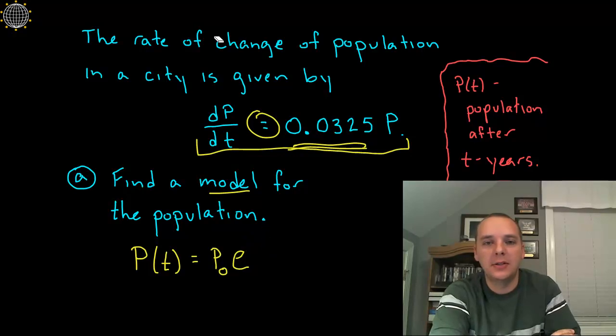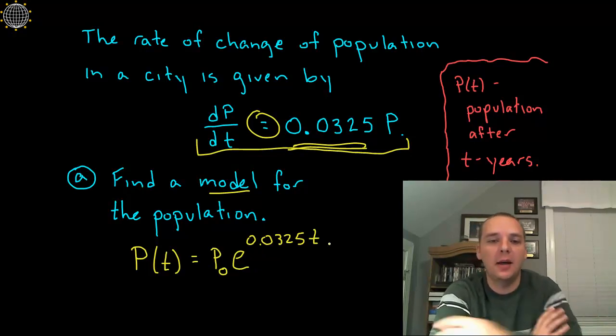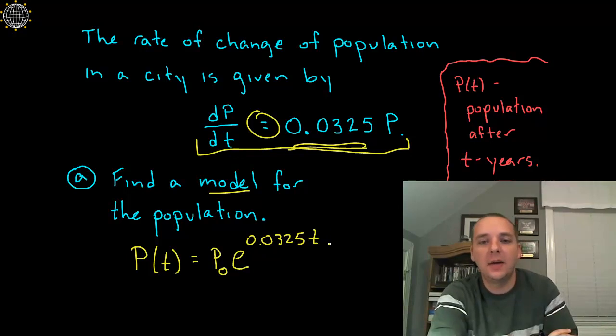So I'm actually just going to go ahead and change that out right now, 0.0325 T. So when you plug in a time, and multiply it times 0.0325, raise E to that quantity times your initial population, that will give you your current population at that given time here. Okay, so that's step one.